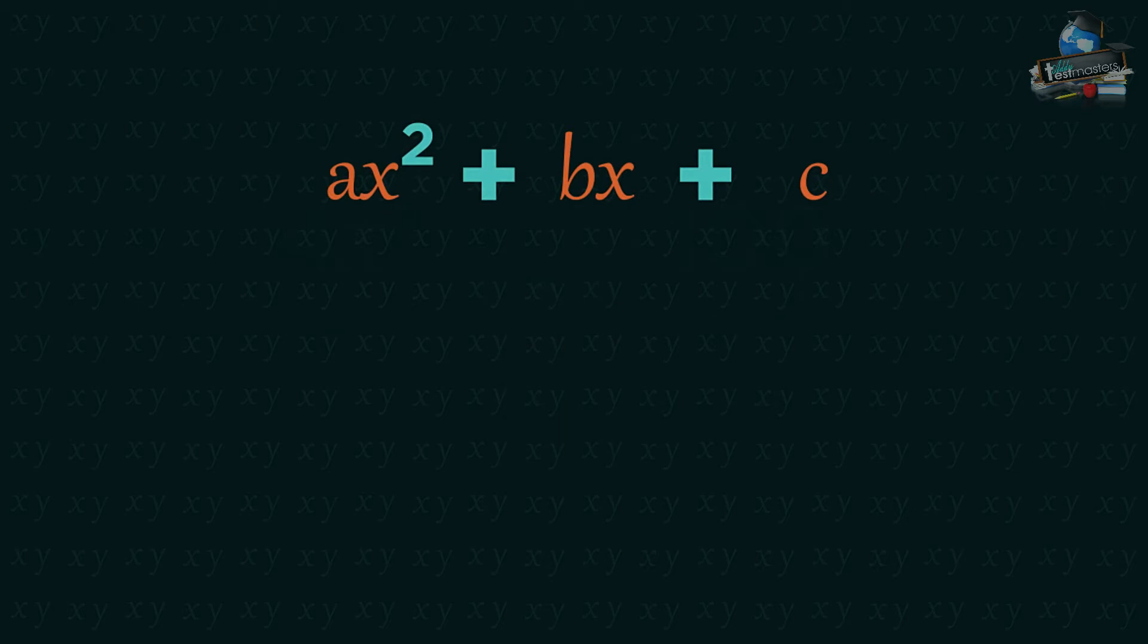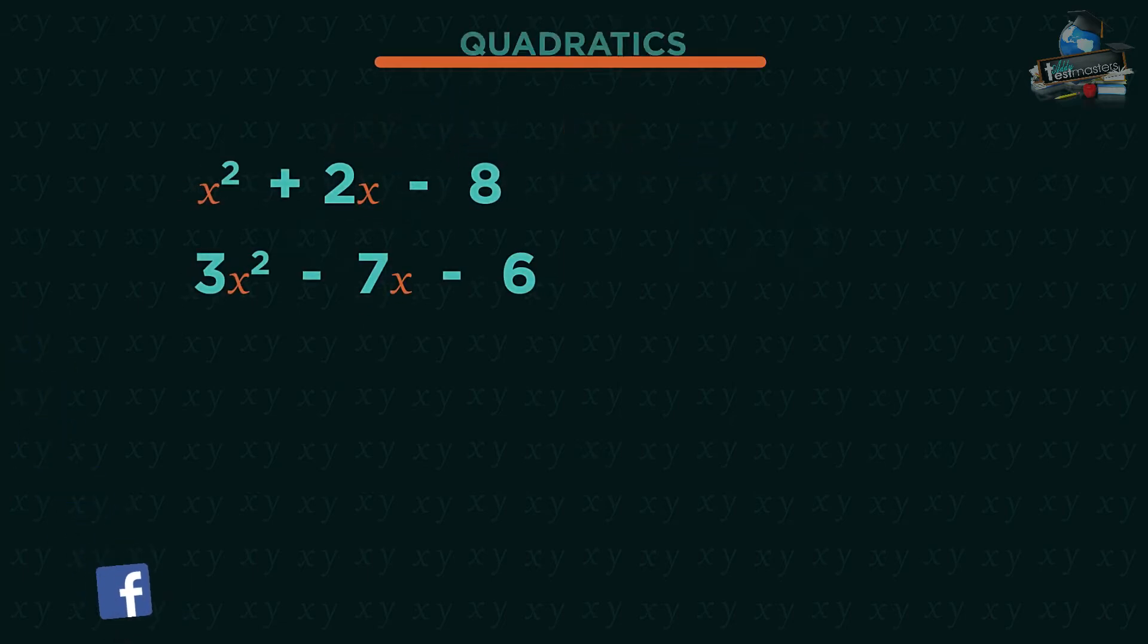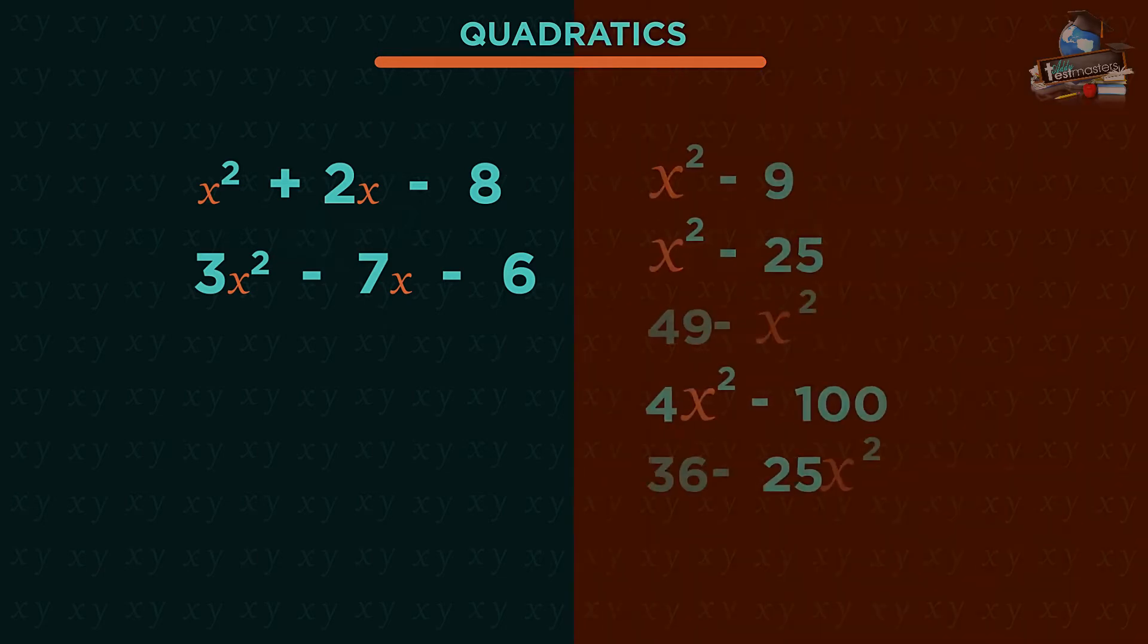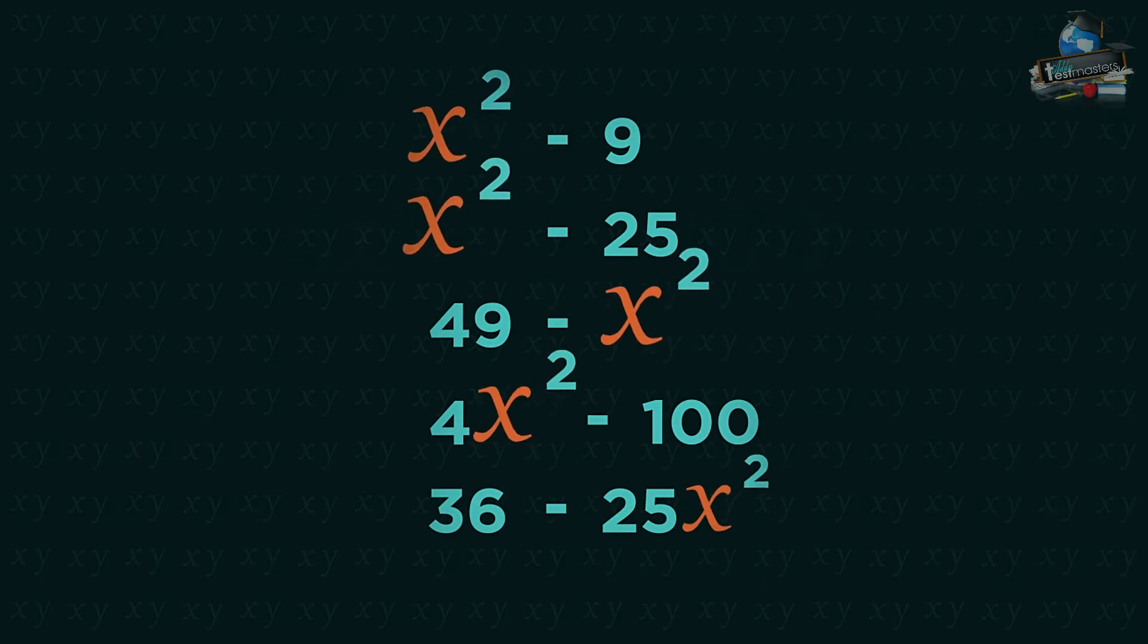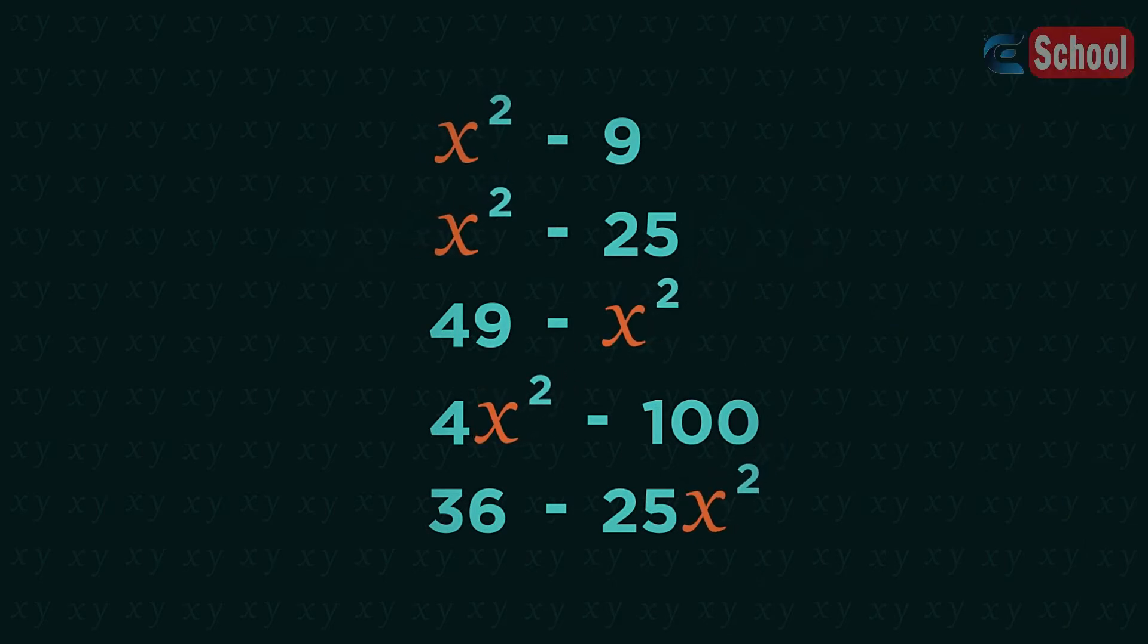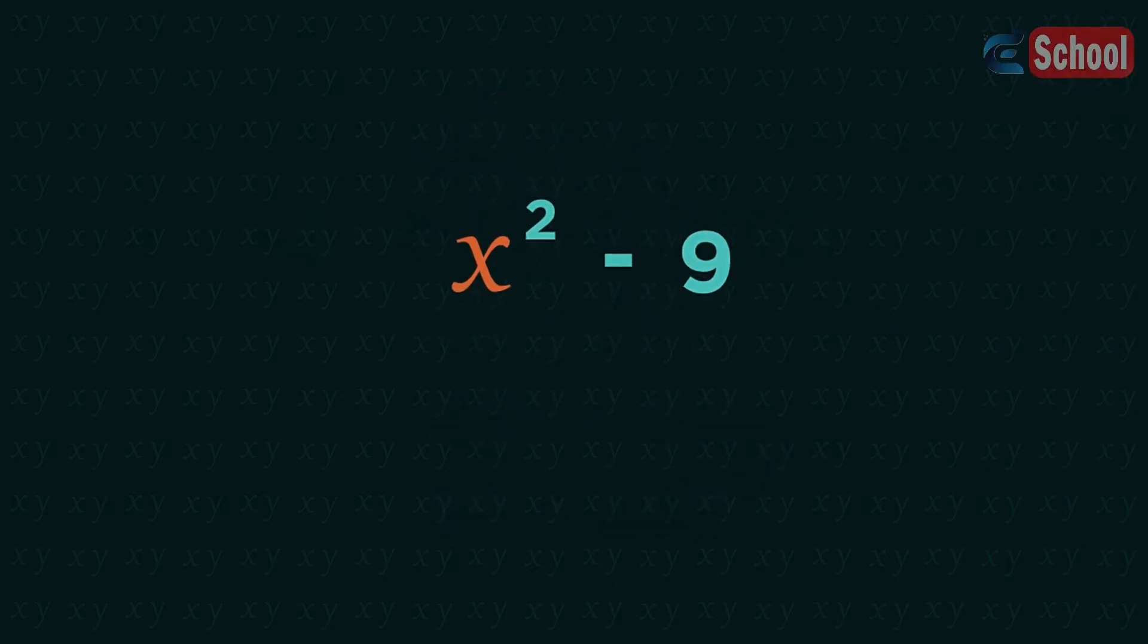These are quadratics because the x squared is the highest power of x. So these are both quadratics, but these are also quadratics. They only have an x squared term and a number. These special quadratics can still be factorized by spotting that it's the difference of two squares.